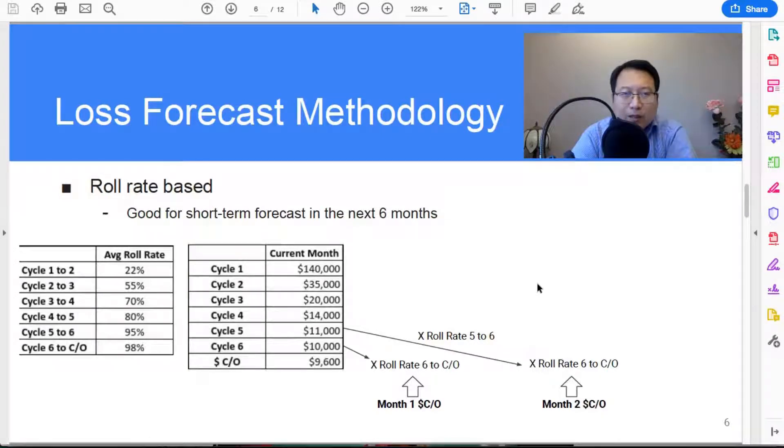Now let's look at the table on the right. In current months we know that this is the distribution of balance in each delinquent bucket, right, so one to six all the way to charge off. Now you are tasked to forecast the loss in the next six months.